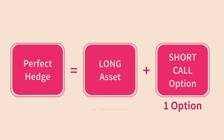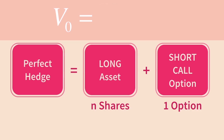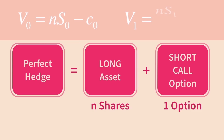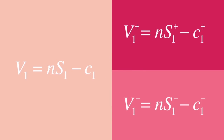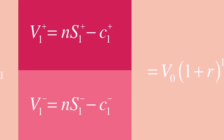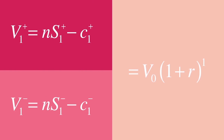For each call option contract that we sell, we need to buy N shares for the perfect hedge. The cost of entering into this contract, denoted V sub zero, is given by N times the cost of a share minus the call premium we earn by going short. At the end of one period, the hedged portfolio will be worth N times the stock price at end of period, minus the amount owed to the call holder. Because this portfolio is a perfect hedge, no matter what happens to the underlying price, the portfolio must produce the same return — the risk-free rate.